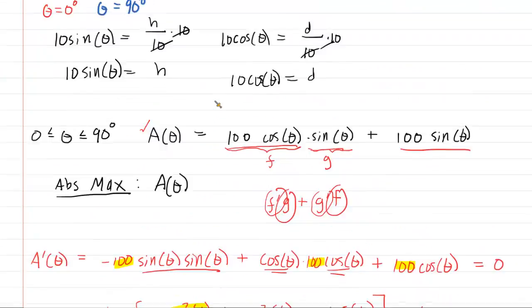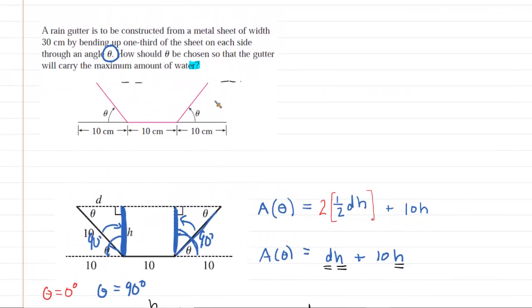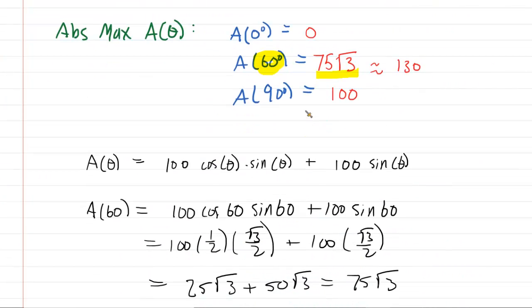Let's make sure we have actually answered the question. It says how should theta be chosen? We just stated it - theta should be 60 degrees. That is the final answer. So in case you need to go out there and design a gutter, you now know how to do it.